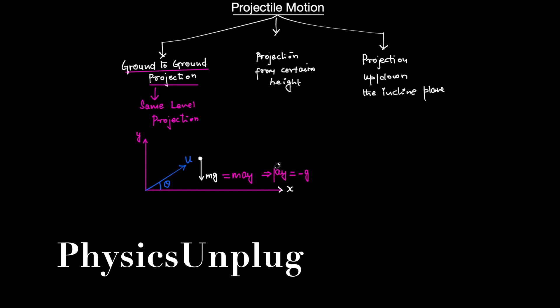Since there is no force in the x-direction, the force in the x-direction is zero. Mass is not zero, so acceleration in the x-direction is zero. These are two important things we should keep in mind when discussing ground-to-ground projection.